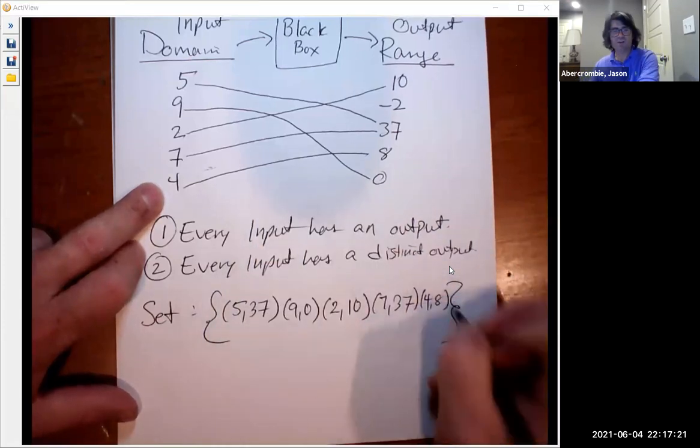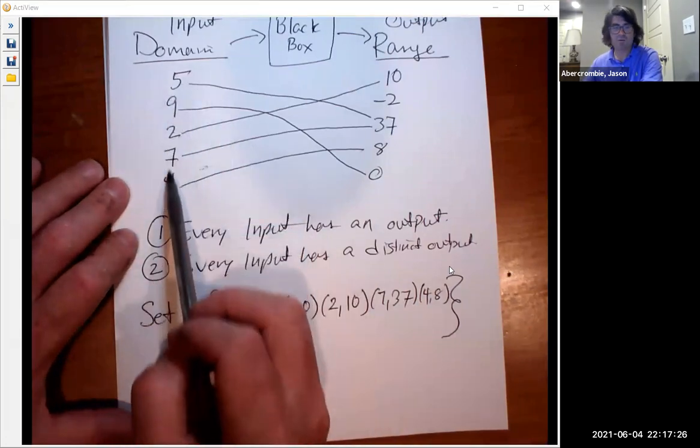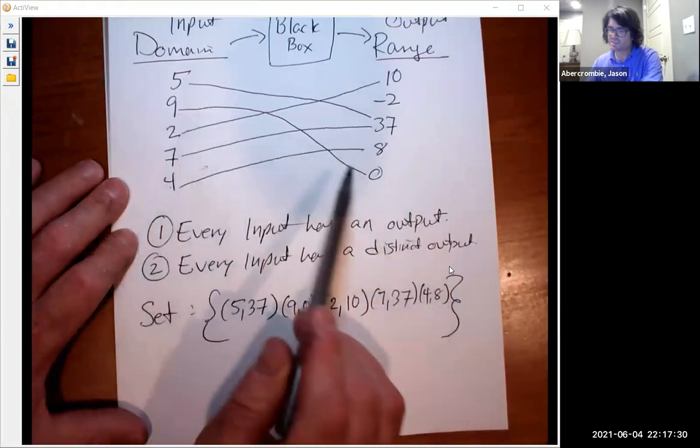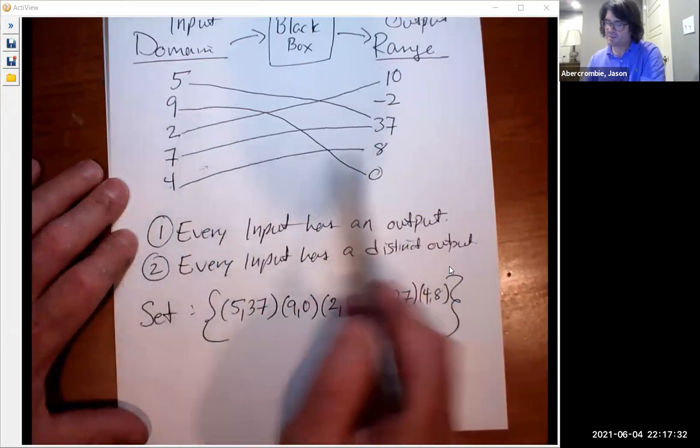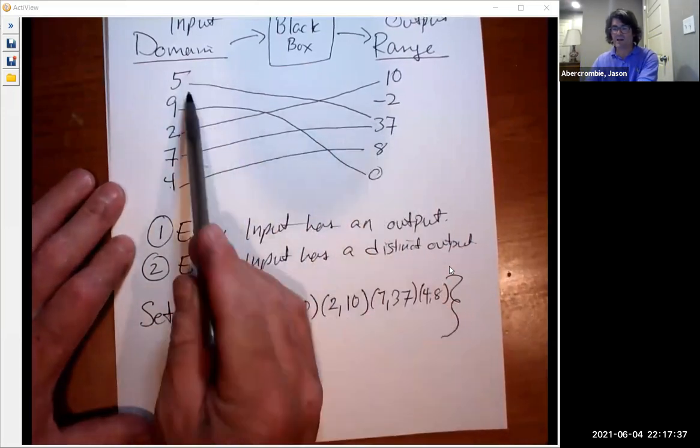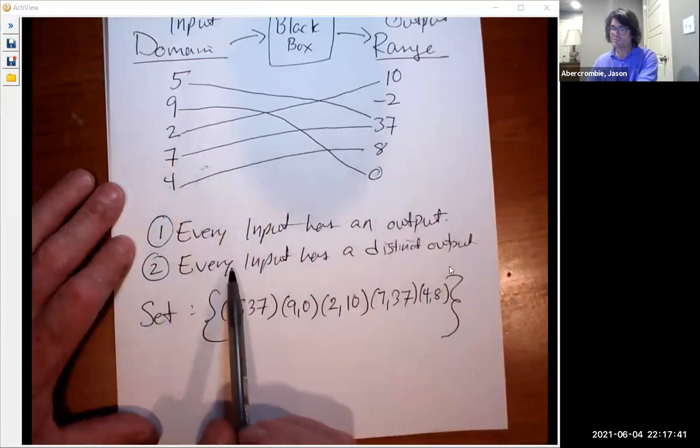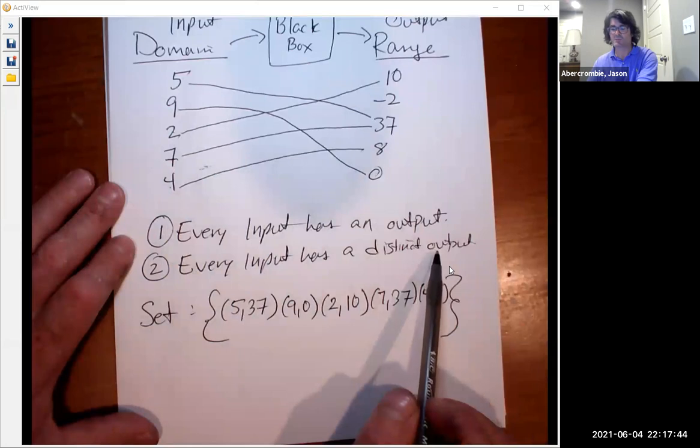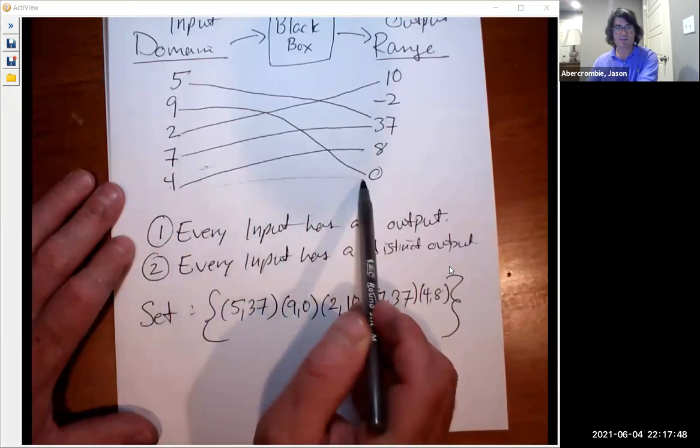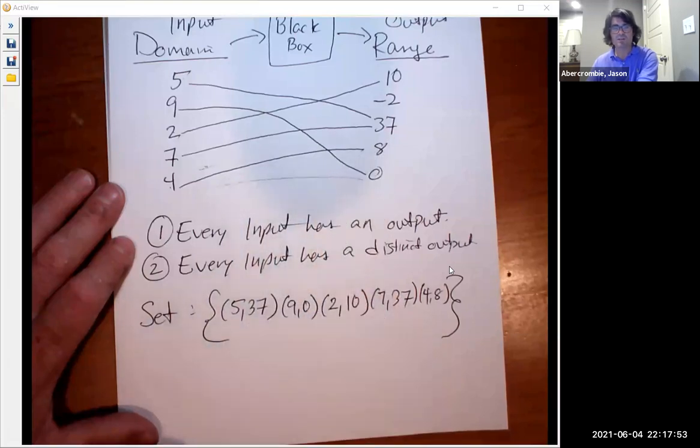So this is a function because it passes my two rules. Every input, every domain item, goes somewhere. And also nine only goes to zero, four only goes to eight, seven only goes to 37, five only goes to 37. It's okay that five and seven both lead to the same outcome, that's fine. Every input has a distinct output, it only goes to one spot. If I had drawn a line saying four goes to zero right here along with going to eight, that would have caused it to not be a function.